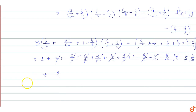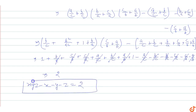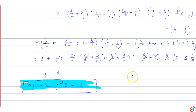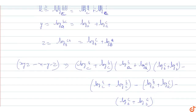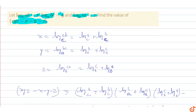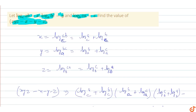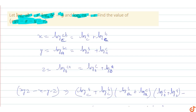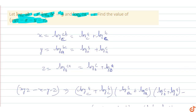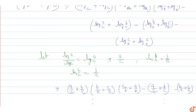So xyz minus x minus y minus z equals 2. This is the final answer, given that x equals log(ab) base c, y equals log(bc) base a, and z equals log(ca) base b. The value of xyz minus x minus y minus z equals 2.